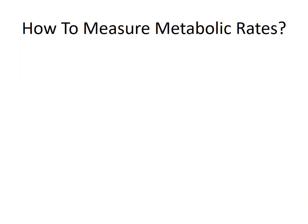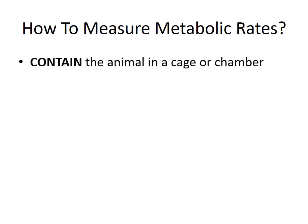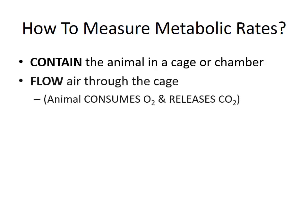Moving right along, let's look at how we actually measure metabolic rates. We're going to be concentrating on metabolic rates of experimental animals, particularly small ones such as mice and rats. First of all, you contain the animal in a cage or chamber. You flow air, pushing it or pulling it, through the cage. And the animal, of course, is consuming oxygen and releasing CO2, unless it's dead.